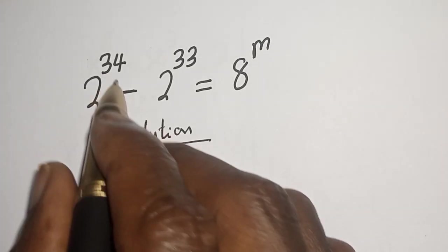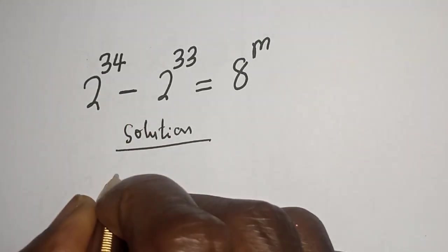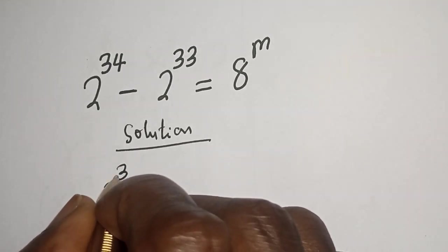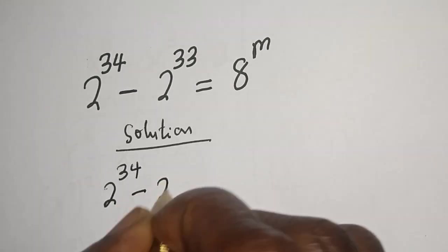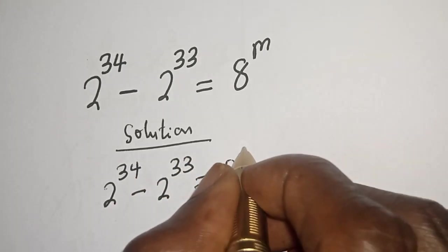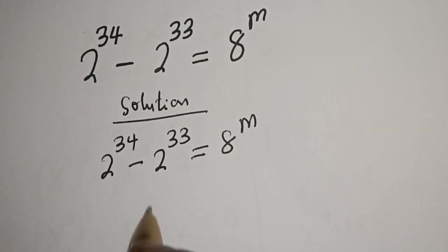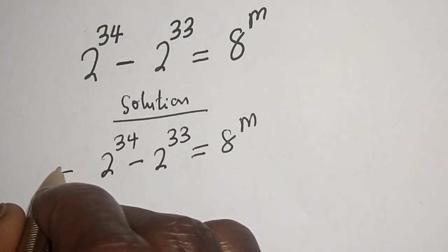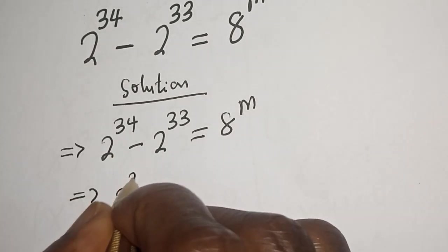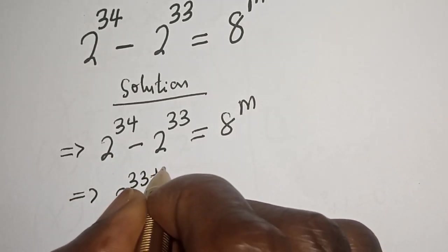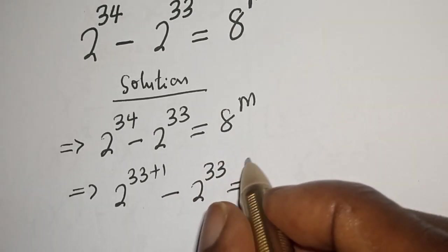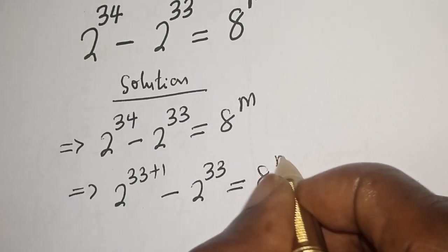We have 2 raised to power 34 minus 2 raised to power 33 is equal to 8 raised to power m. Now, 2 raised to power 34 can be written as 2 raised to power 33 plus 1, minus 2 raised to power 33, is equal to 8 raised to power m.